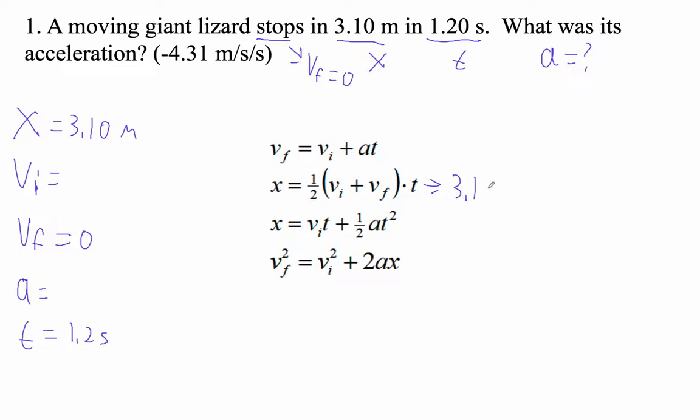So 3.1 equals one half times 1.2 times the initial velocity, which is what we want to find, plus our final velocity is zero, times 1.2.